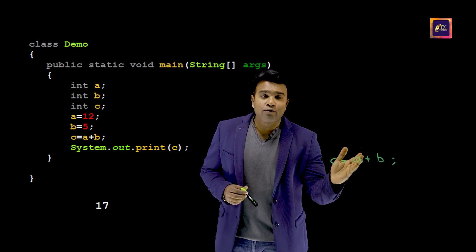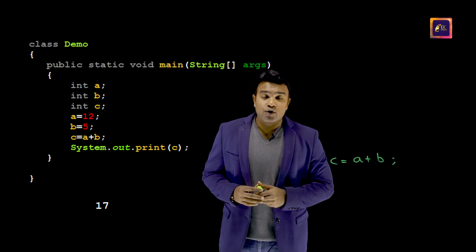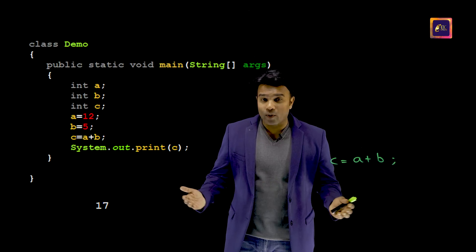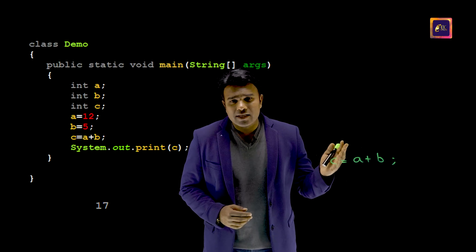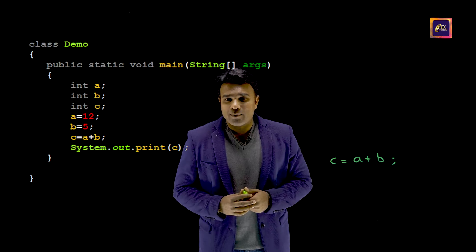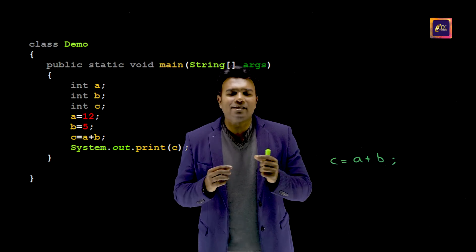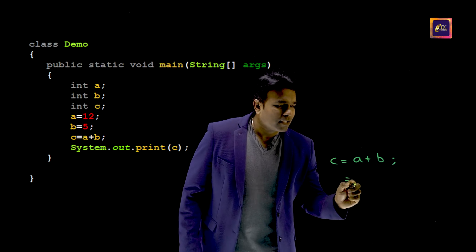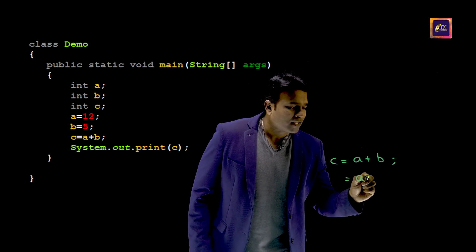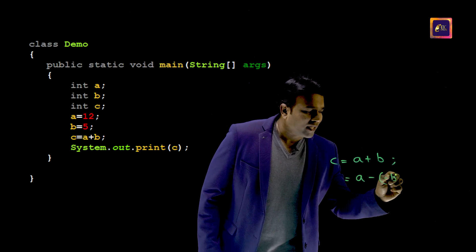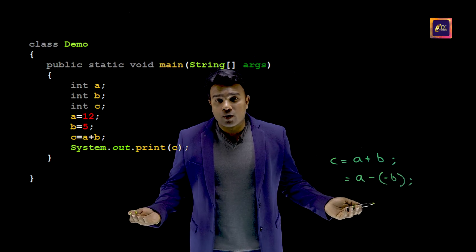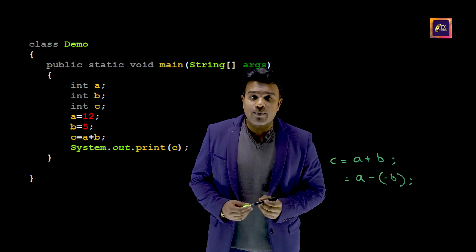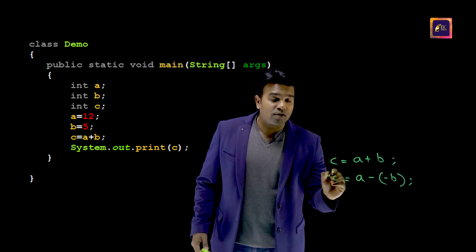What do I have to replace this with so that I still get the same output? The solution is actually very simple. All I have to do is replace the plus with minus of minus. As you all know in mathematics, minus into minus happens to be plus — that is all I am supposed to do.